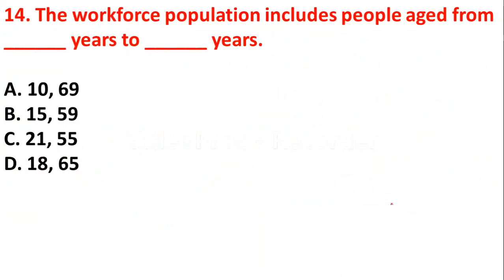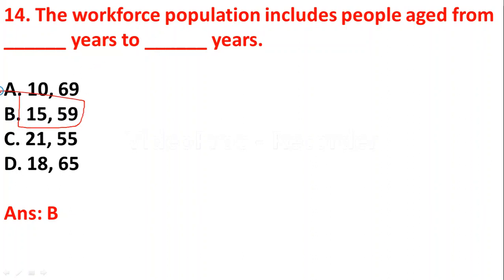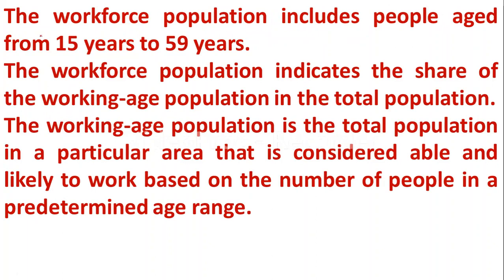The next question: the workforce population includes people aged from how many years to how many years? Option A: 10 to 69; Option B: 15 to 59; Option C: 21 to 55; Option D: 18 to 65. The right answer is option B — 15 to 59. The workforce population in India includes people aged from 15 years to 59 years, indicating the share of working age population in the total population.